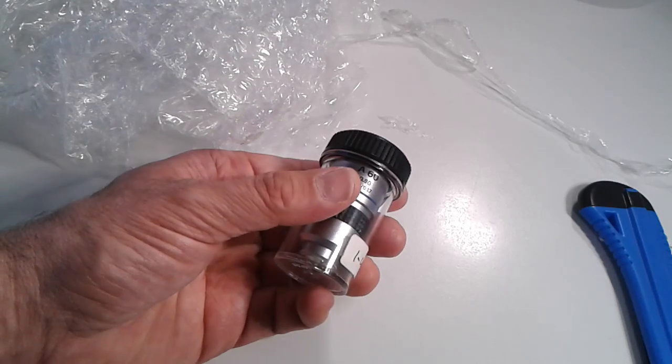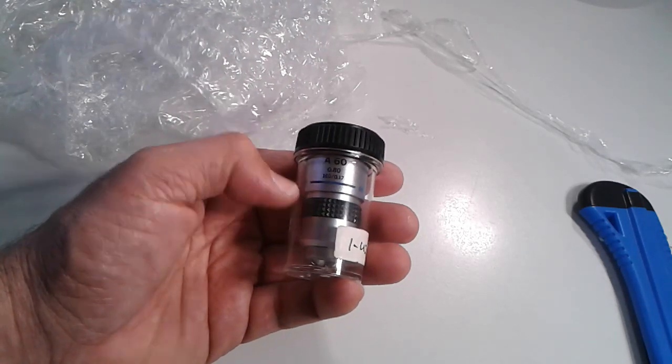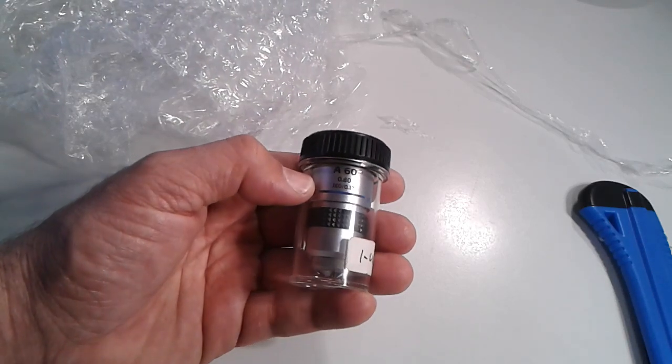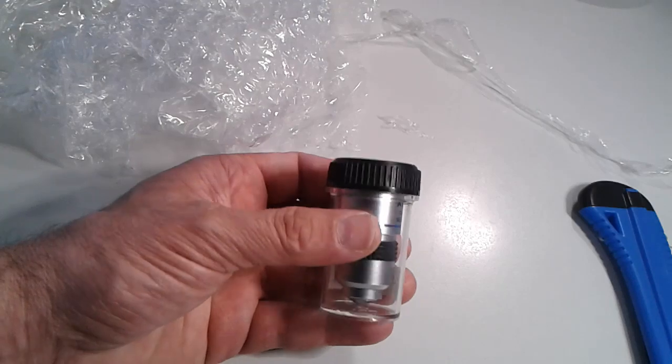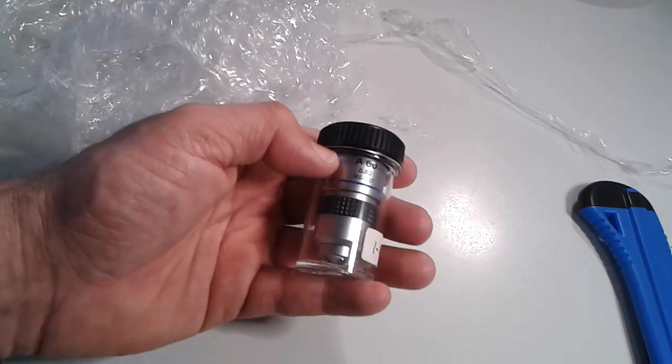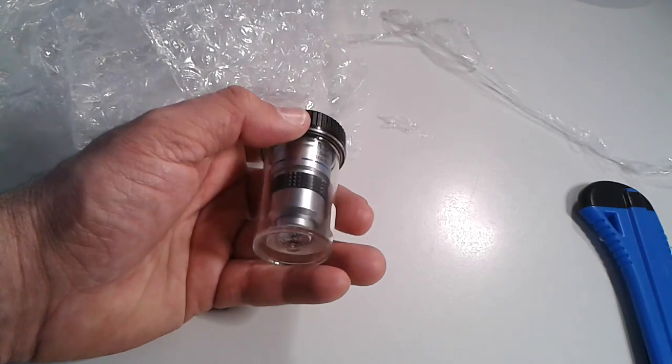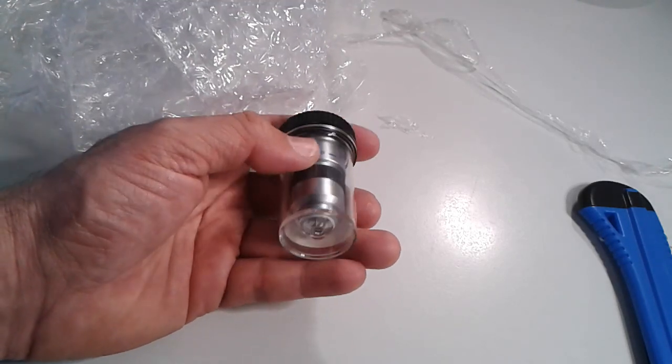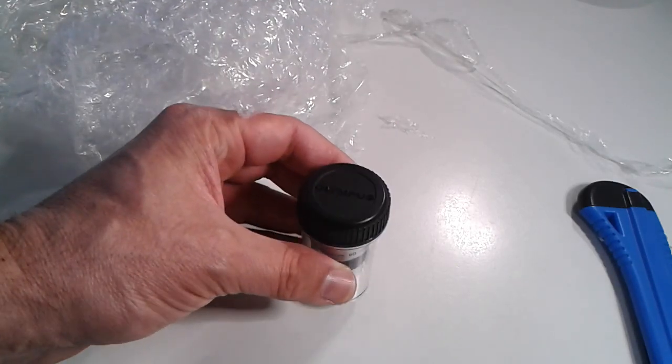And I had another 60x objective already installed, but it's not of the same series. And therefore this objective is not par focal. So this means I have to always change, always have to refocus, and that is not very convenient. But with this objective, it should be par focal and then it's going to be much more convenient and easier to do microscopy work. So, but let's exchange it and let's have a closer look.